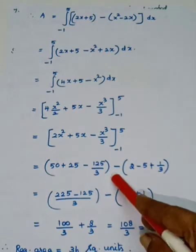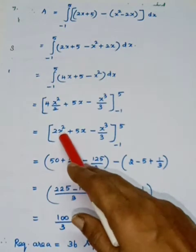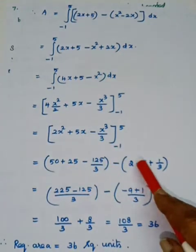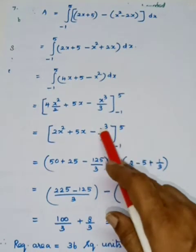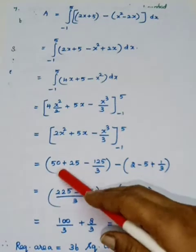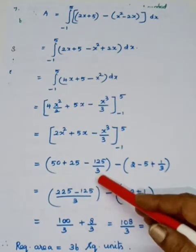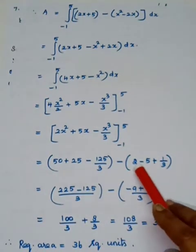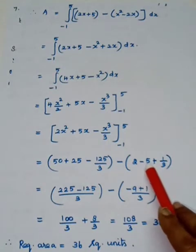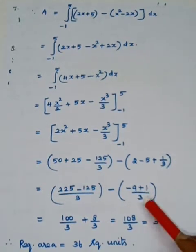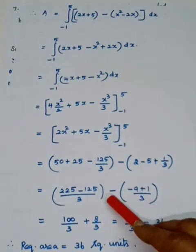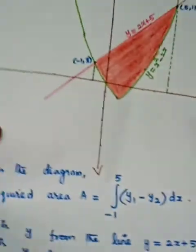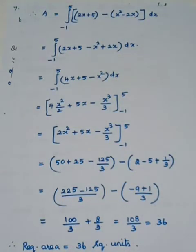Applying the lower limit x = −1: 2(1) + 5(−1) − (−1)³/3 = 2 − 5 + 1/3 = −3 + 1/3. Subtracting: (75 − 125/3) − (−3 + 1/3). Taking LCM 3: (225 − 125)/3 − (−9 + 1)/3 = 100/3 − (−8/3) = 100/3 + 8/3 = 108/3 = 36. The required area is 36 square units.